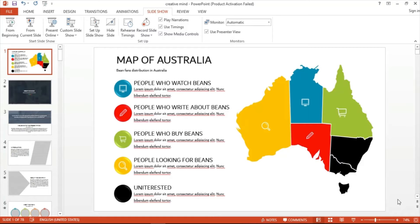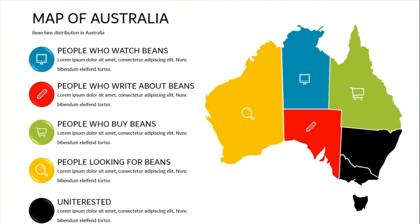Now let me show you what a pop-up or rollover text looks like. Notice, when I hover over the portions of the map here on the normal view, nothing really pops up. But if I switch to presentation mode, hovering on each of the portions shows pop-up or rollover text, displaying the information they're representing.